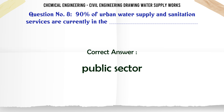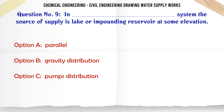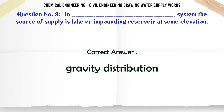The correct answer is Public Sector. In which system is the source of supply a lake or impounding reservoir at some elevation? A. Parallel, B. Gravity distribution, C. Pumps distribution, D. Rain distribution. The correct answer is Gravity distribution.